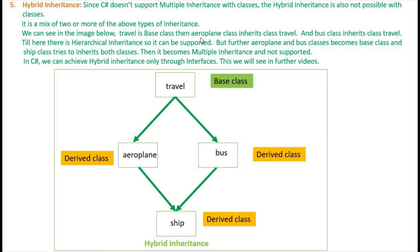In the image below, Travel is the base class. Then Aeroplane class inherits class Travel and Bus class inherits class Travel. Till here there is hierarchical inheritance, so it can be supported. But further, Aeroplane and Bus classes become base classes and class Ship tries to inherit both classes, making it multiple inheritance, which is not supported.